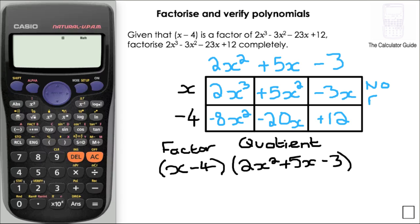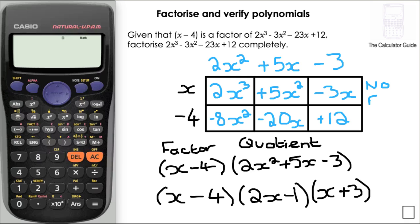So here we've got the factor x minus 4 and the quotient 2x squared plus 5x minus 3. We need to factorise the quadratic quotient part to factorise completely. Rewriting with three brackets, we have x minus 4, 2x minus 1, and x plus 3 as our complete factorisation.